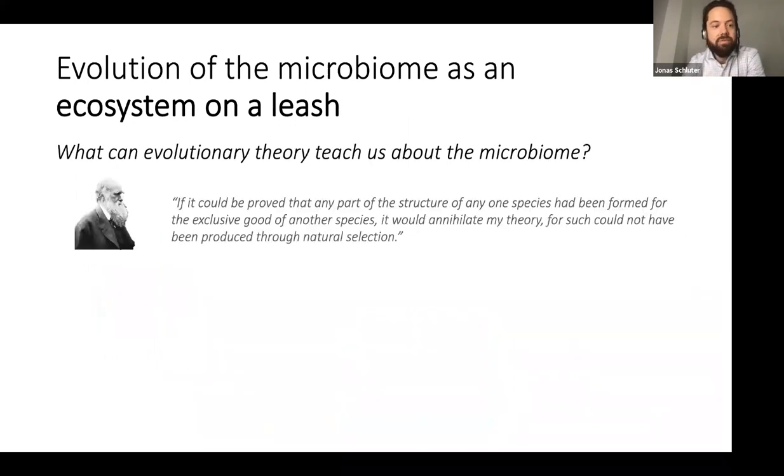This puzzle comes already from what Darwin wrote. Darwin has said that if it could be proved that any part of the structure of any one species had been formed for the exclusive good of another species, it would annihilate my theory, for such could not have been produced through natural selection. But when you read the gut microbiome literature or the microbiome literature in general, it is generally considered beneficial. There's an interesting question here, how we can explain this seeming cooperation between microbes and hosts. That's been the subject of my PhD research in Oxford and then later in Japan.